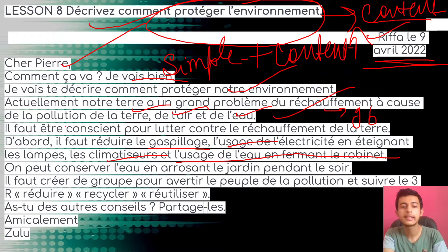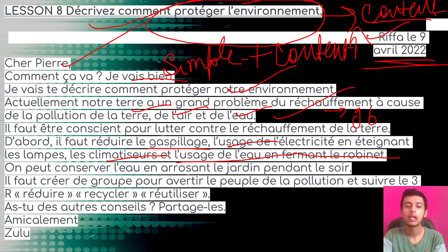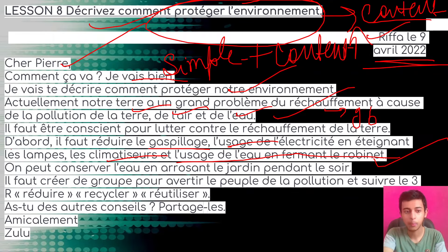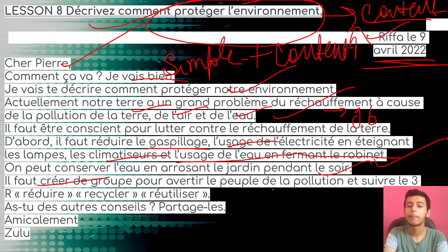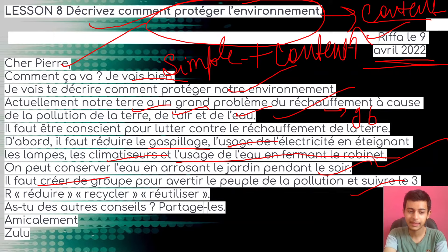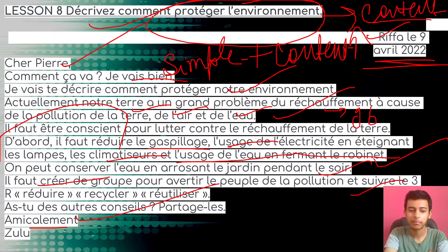First, it is necessary to reduce waste and garbage, and also reduce electricity by switching off the lamp when not in use. Reduce the use of water by closing the tap when not needed — this helps conserve water. It is necessary to create a group for making people aware about pollution and following the three Rs: reduce, recycle, reuse.